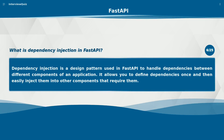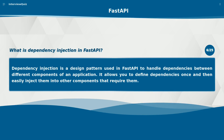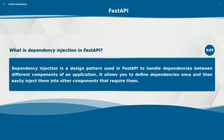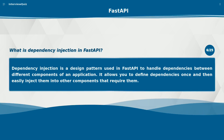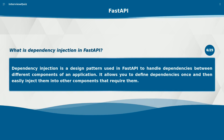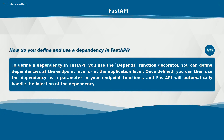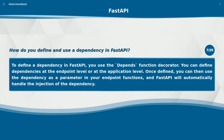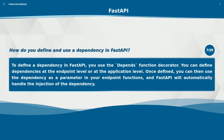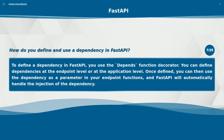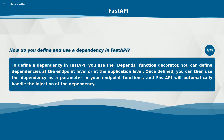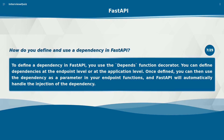What is dependency injection in FastAPI? Dependency injection is a design pattern used in FastAPI to handle dependencies between different components of an application. It allows you to define dependencies once and then easily inject them into other components that require them. To define a dependency, you use the Depends function decorator, and FastAPI will automatically handle the injection.